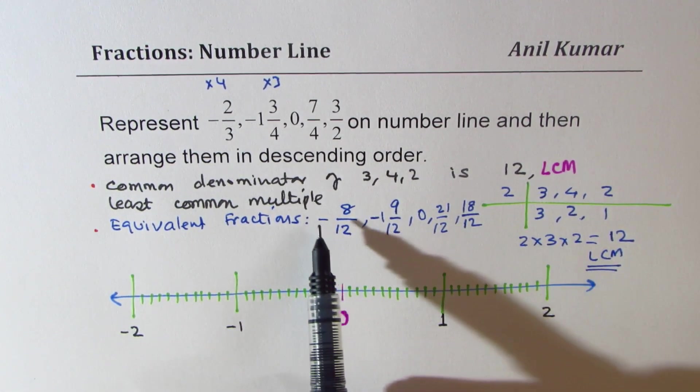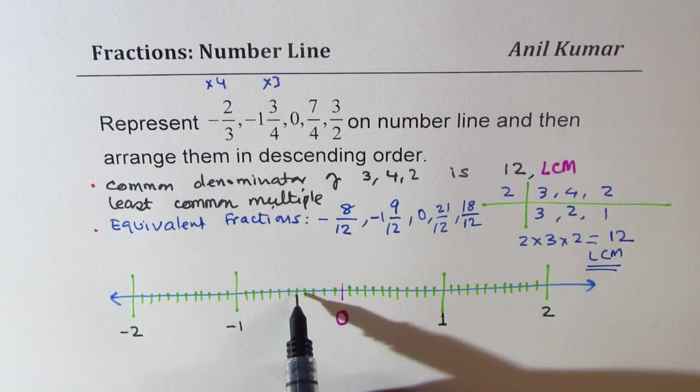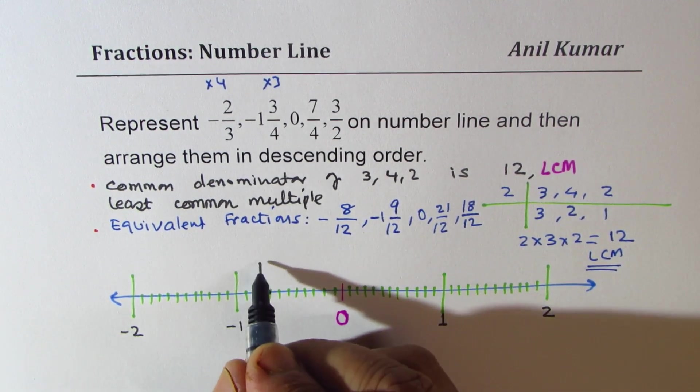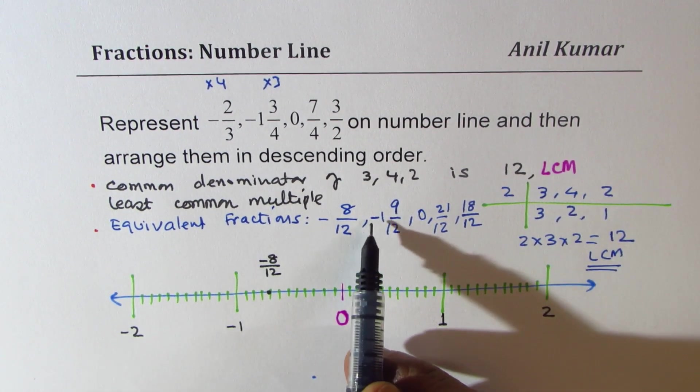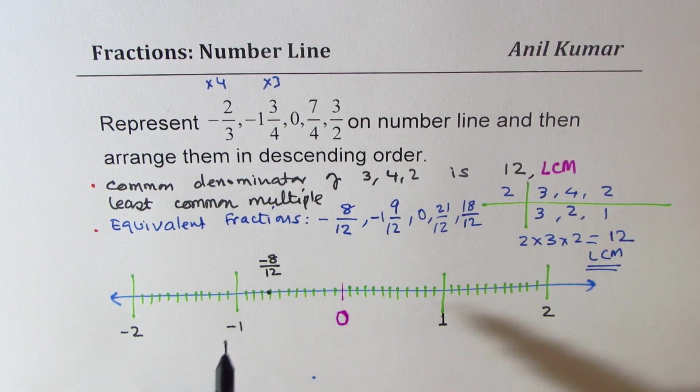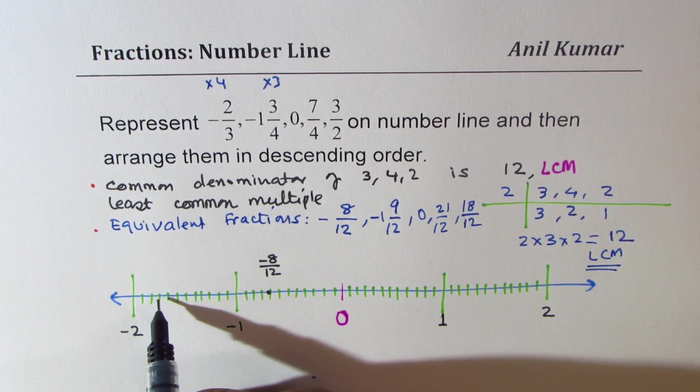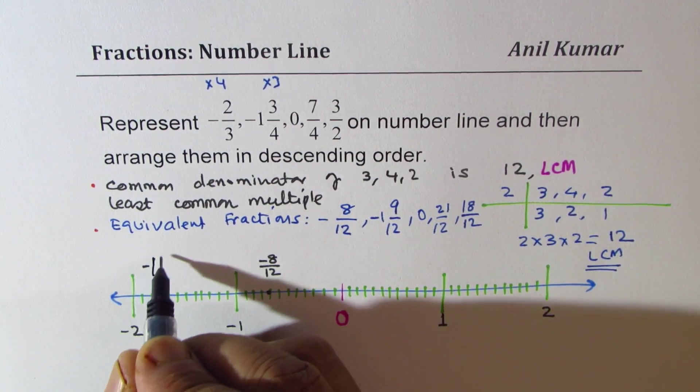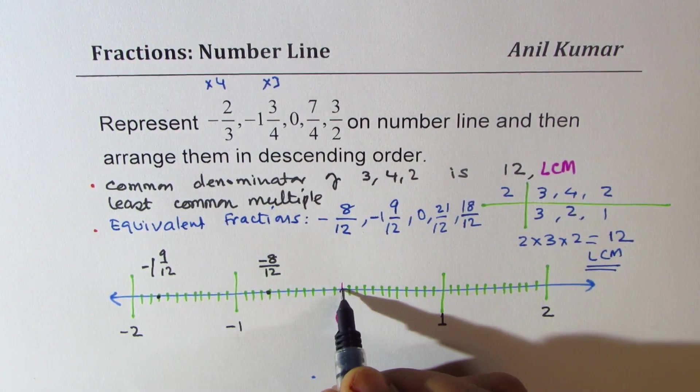So now it's easy. -8/12—so from here count 1, 2, 3, 4, 5, 6, 7, 8. So this number here becomes -8/12. -1 9/12—so we go to -1 and then 9: 1, 2, 3, 4, 5, 6, 7, 8, 9. So that is -1 9/12. Now third number is 0 which is here itself.